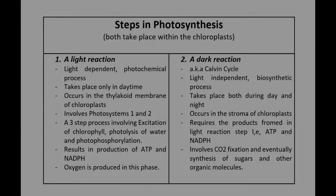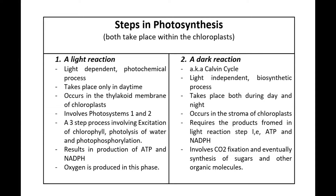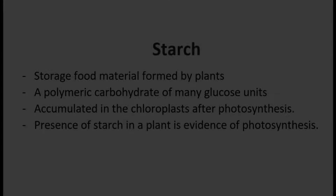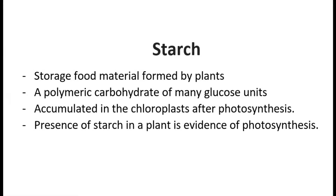Photosynthesis occurs in two major steps, both of which take place within the chloroplasts: a light reaction and a dark reaction. Starch is eventually formed as a reserve food by plants at the end of a photosynthetic process.